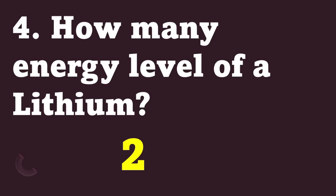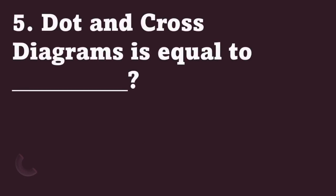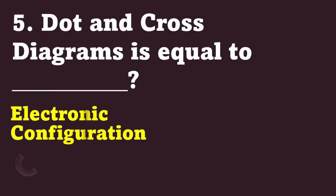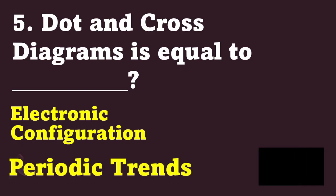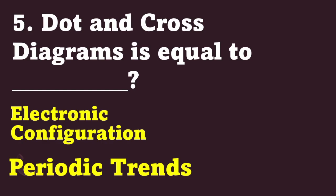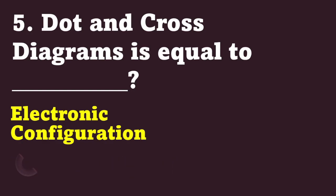For number five. Dot and cross diagrams show — is it electronic configuration? Or is it periodic trends? The correct answer is: electronic configuration.